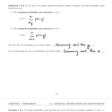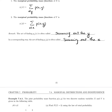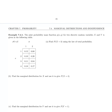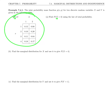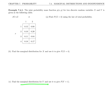We're going to do an example where we'll apply these definitions. Example 7.4.1: the joint PMF p of xy for two discrete random variables x and y is given in the following table. We're asked to find p of x equals 3 using the law of total probability, which we reviewed in the last video. Then we're going to find the marginal distribution for x and the marginal distribution for y.